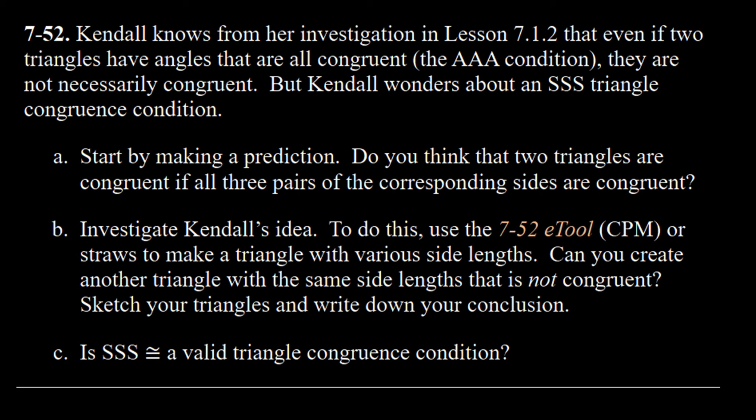We know from way back when that if we have two triangles and all three of the angles are congruent — all three angle pairs have the same measurement — those triangles are not necessarily congruent. And the reason is the scale factor could be different. One could be larger and one could be smaller.